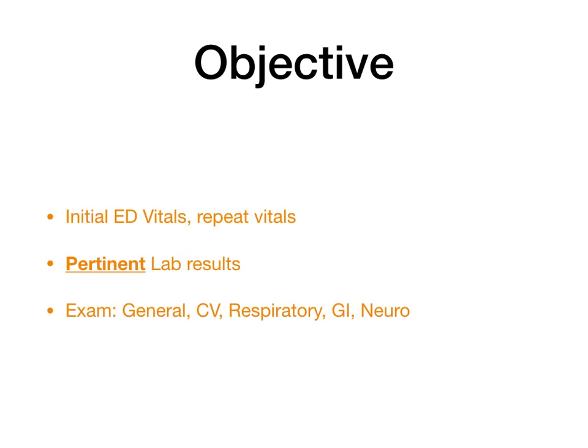When you get to your physical exam, I recommend that you always include these four systems plus anything else that's pertinent: general, heart, lungs, GI, and neuro. It can be quick, as you'll see in the example, but you definitely want to include this stuff.